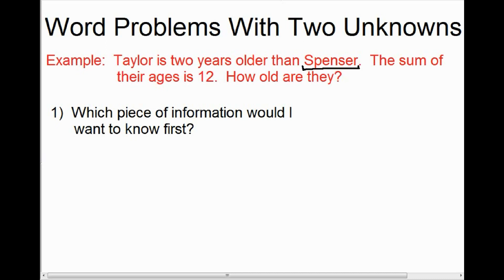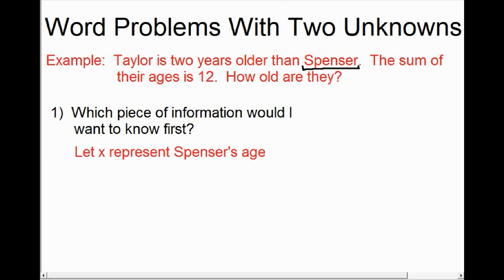When you answer the question of what you would want to know first, that's what you assign the variable to. That's how we determine what we're going to say in our let statement. We're going to assign a variable to the unknown we would want to know first, which is Spencer's age. So we say: let X represent Spencer's age. Once you've determined which one you're going to assign the variable to, we do have to assign an expression to the second unknown — we are not going to choose a different letter.